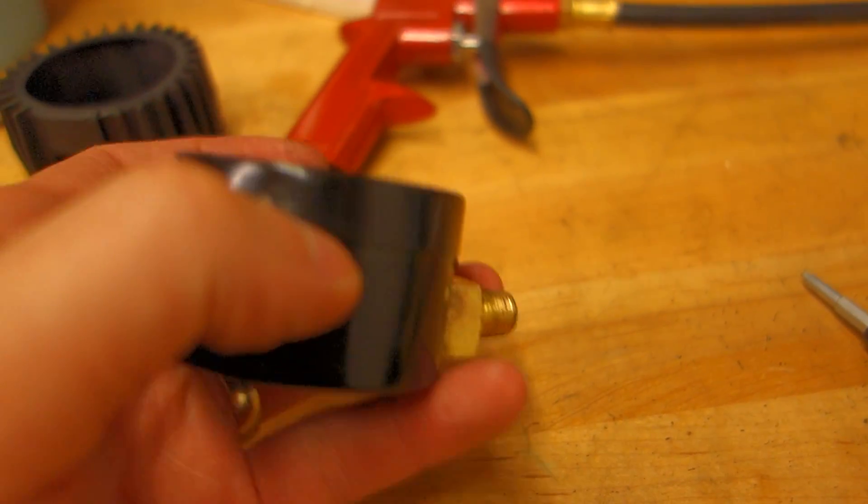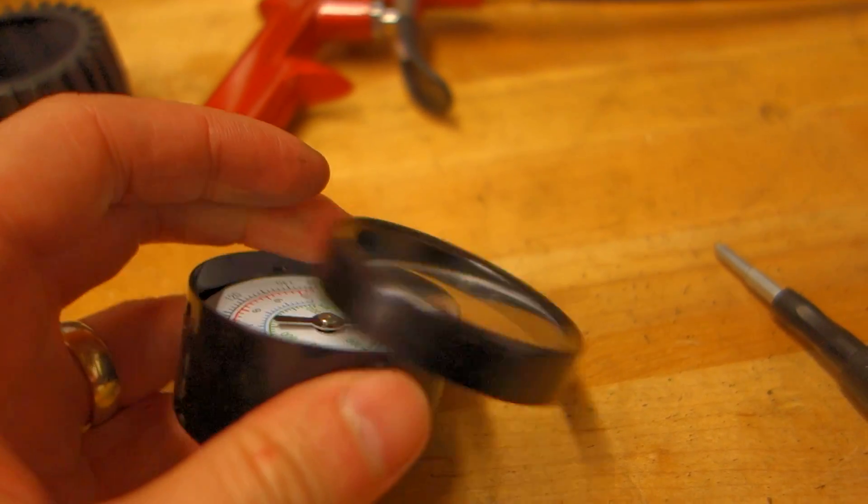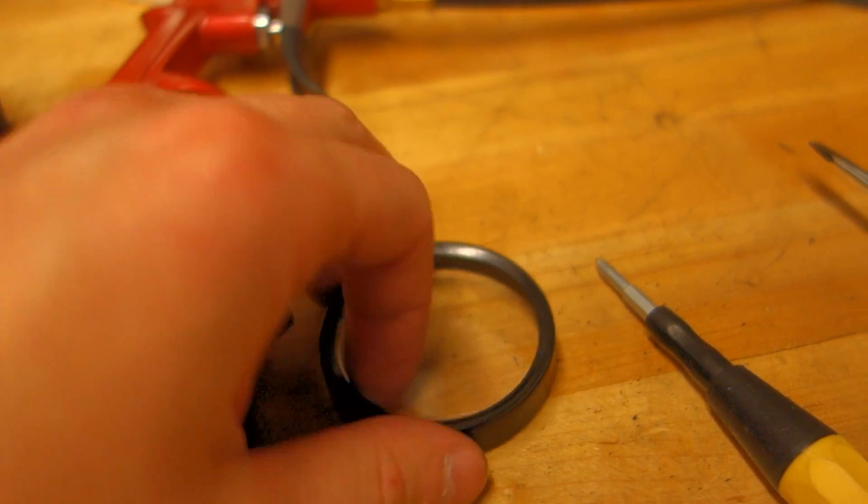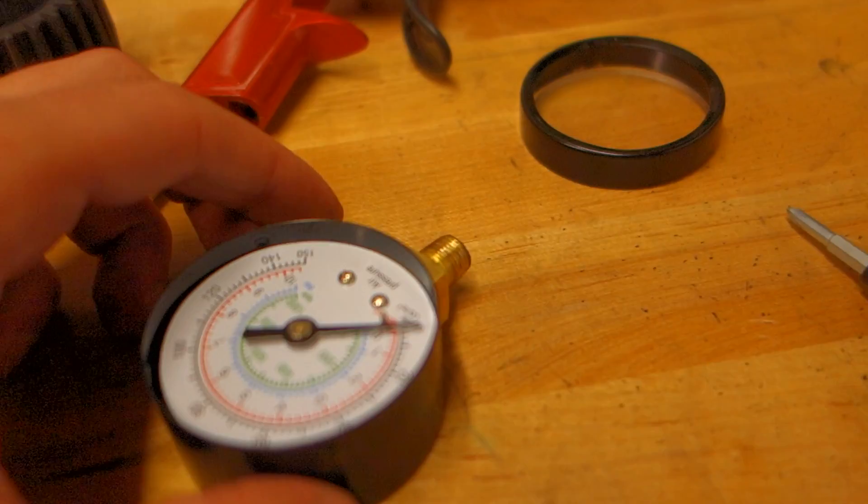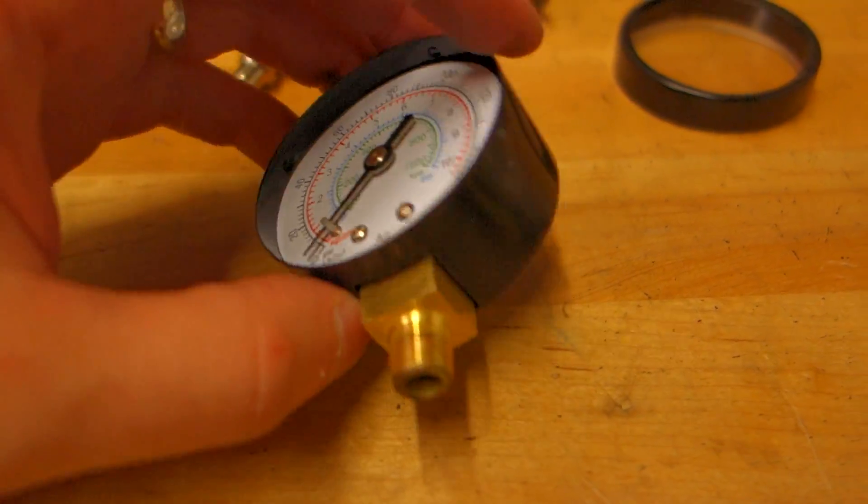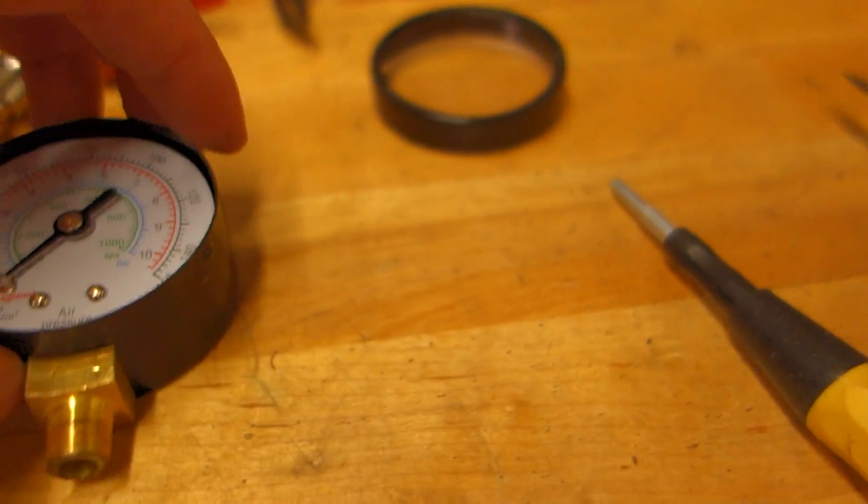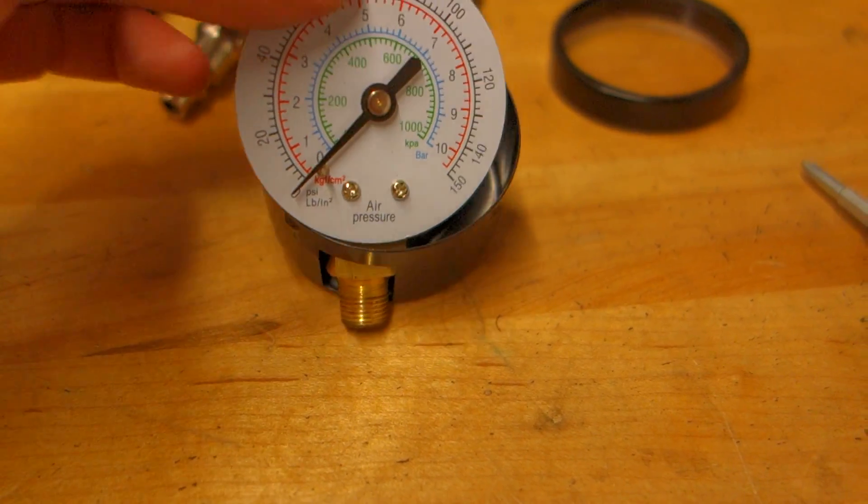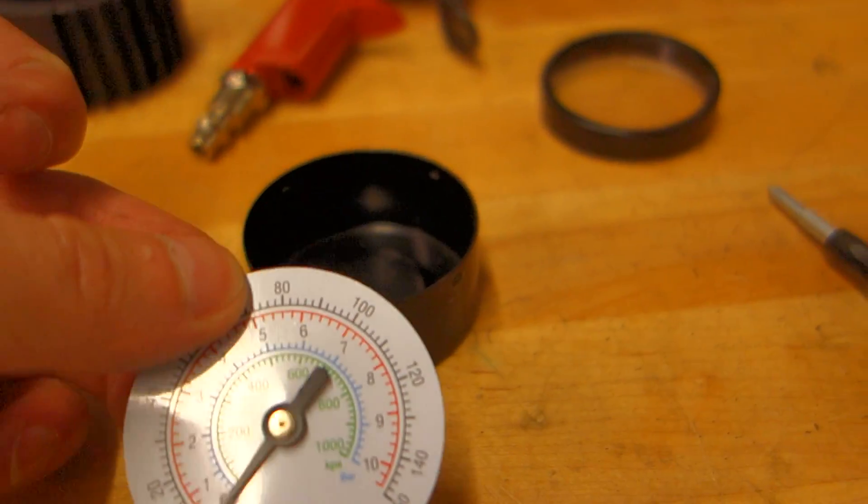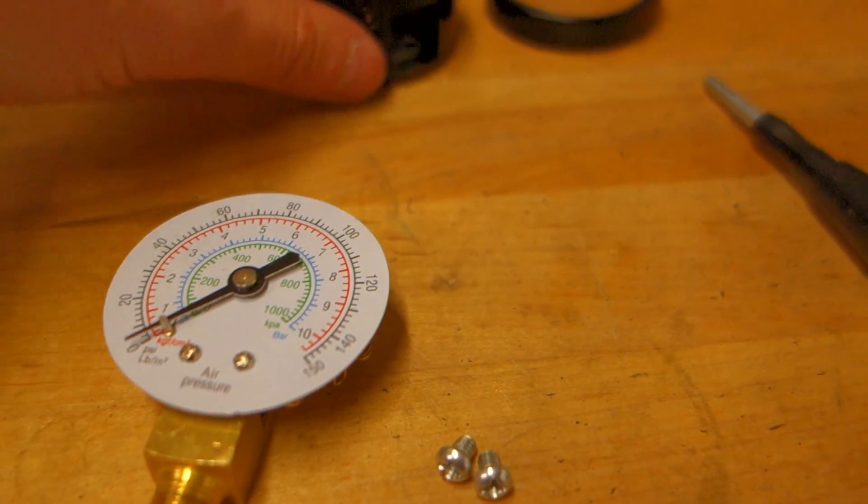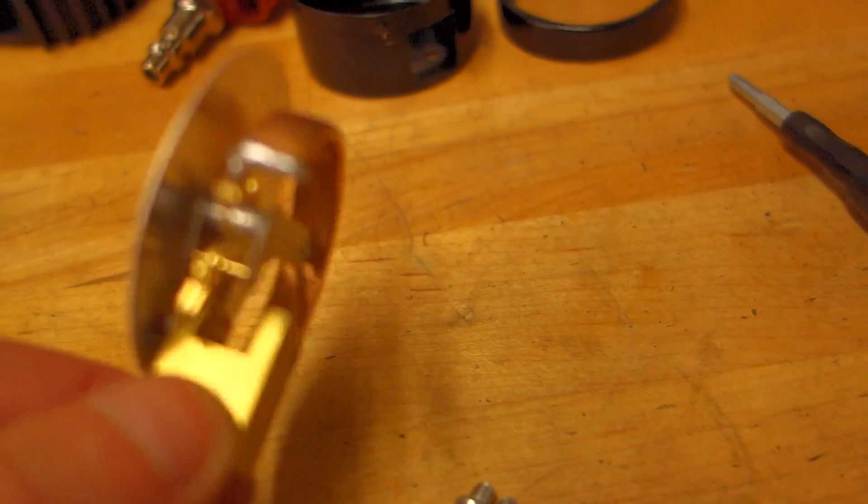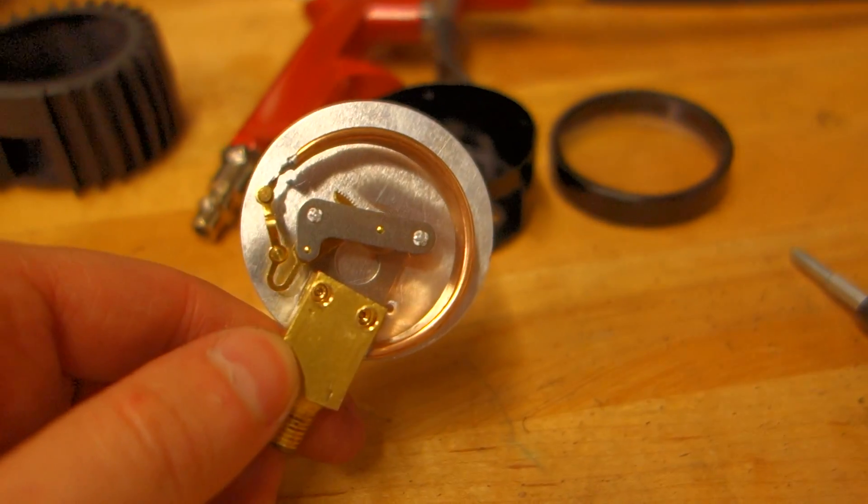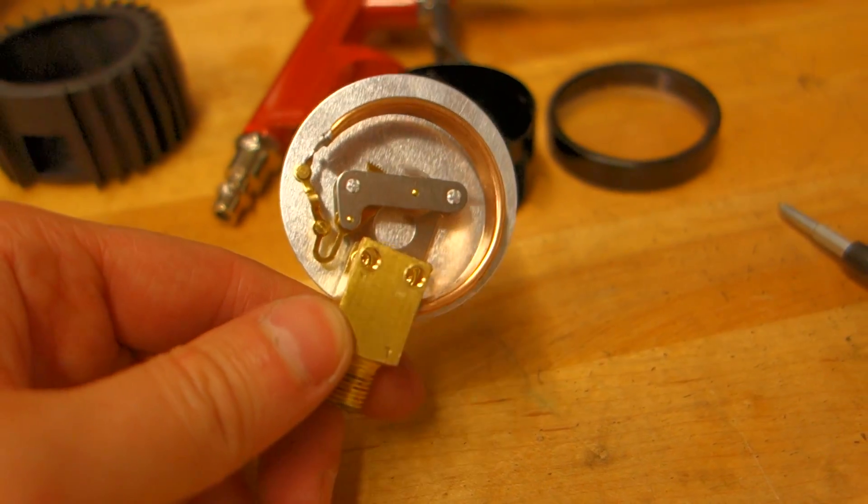So once you loosen that up you take the bezel off with the glass, and if you've taken your screws off, the mechanism of the gauge with the front and dial comes out. And voila, this is what inside of the gauge looks like.